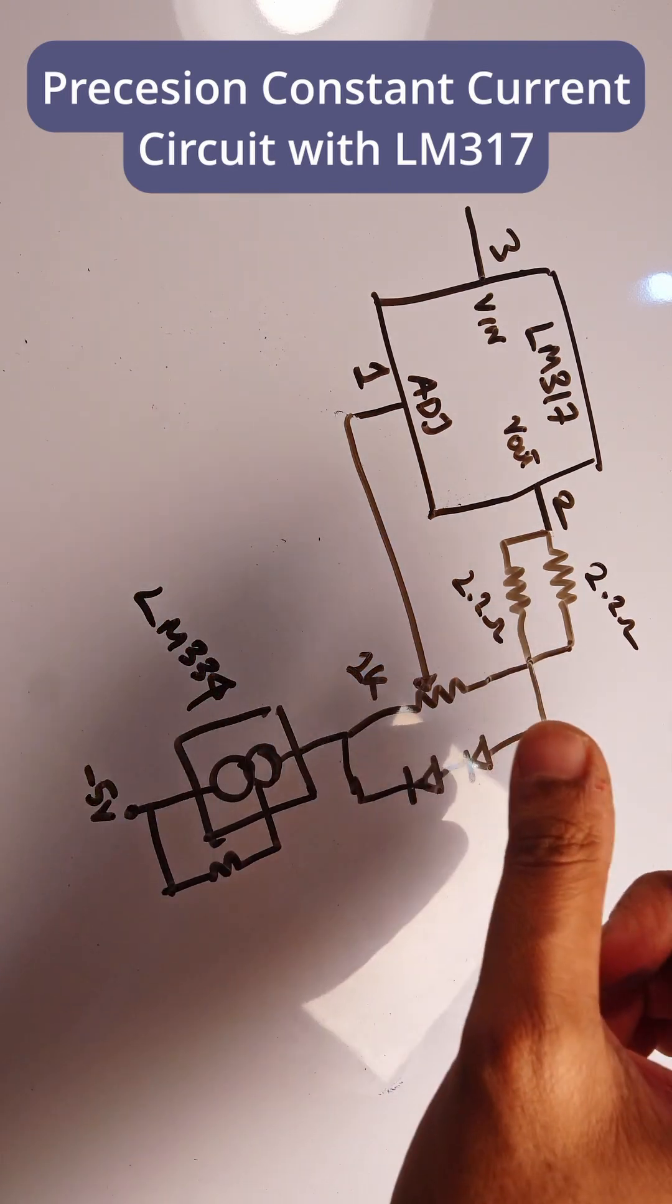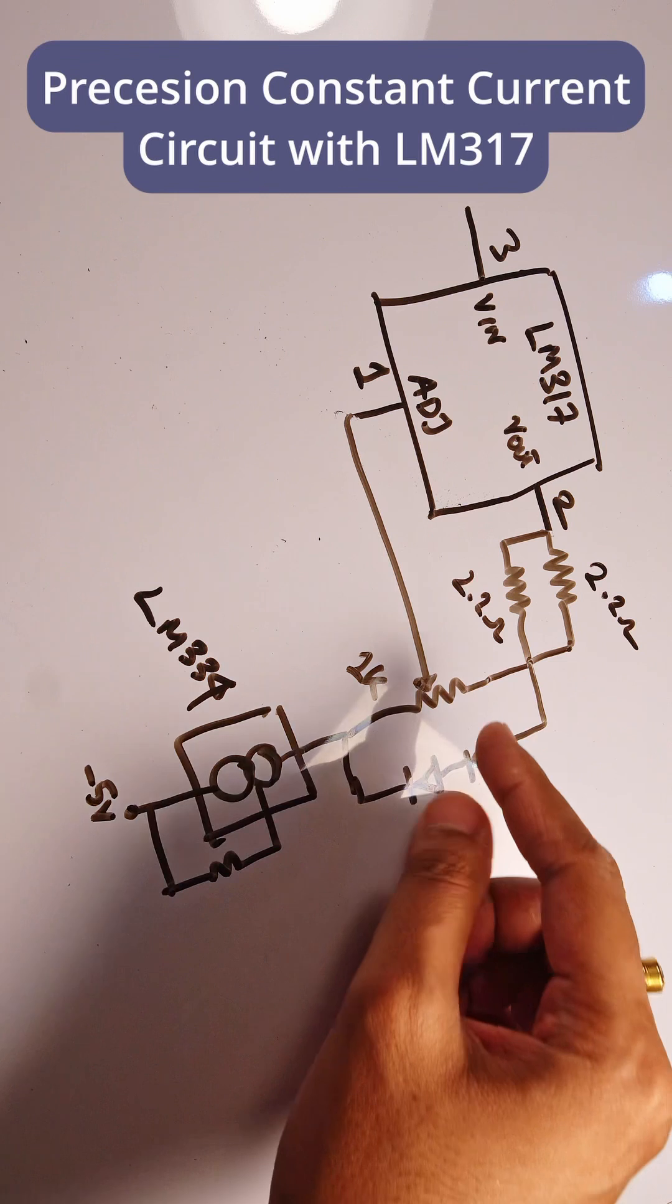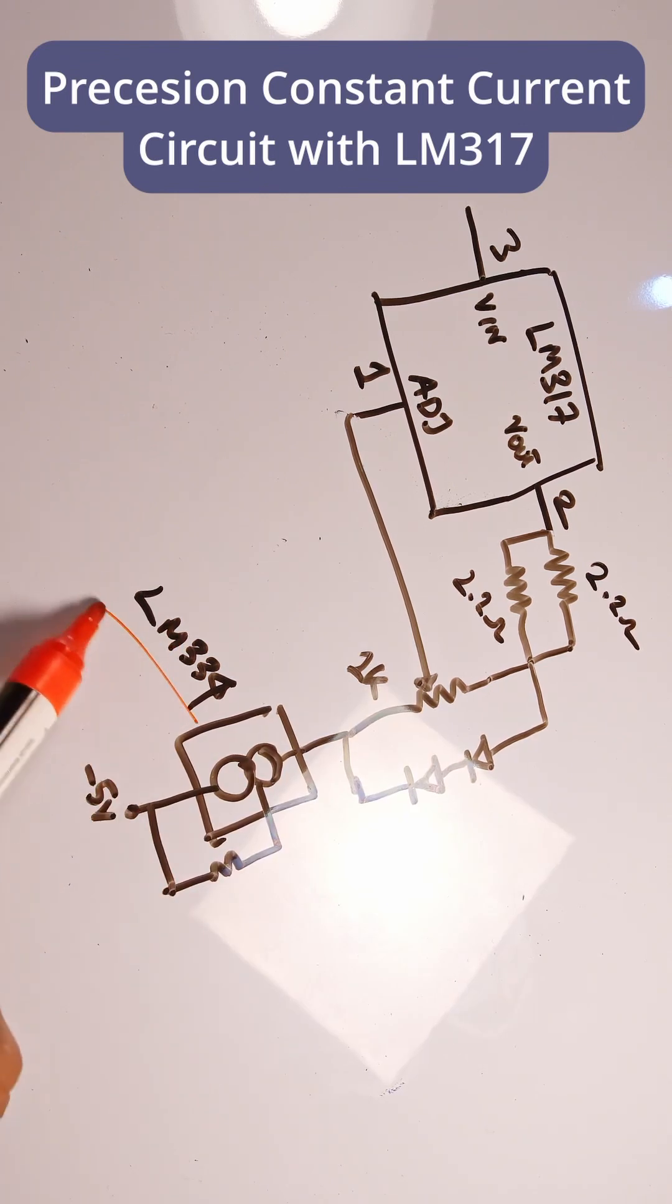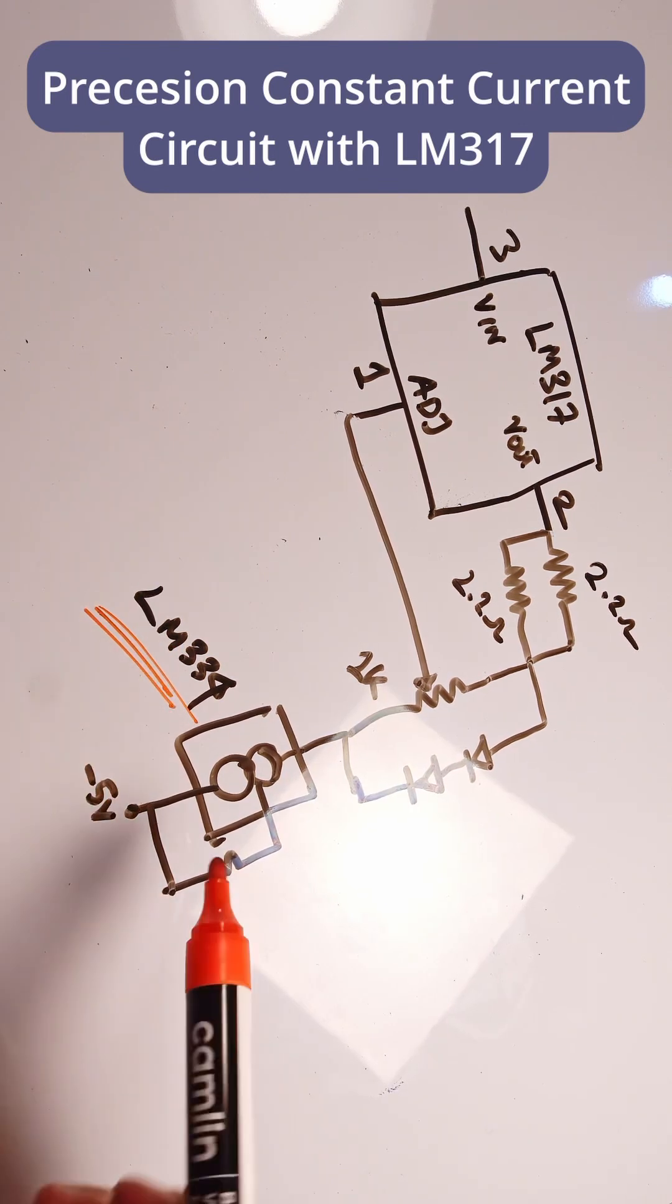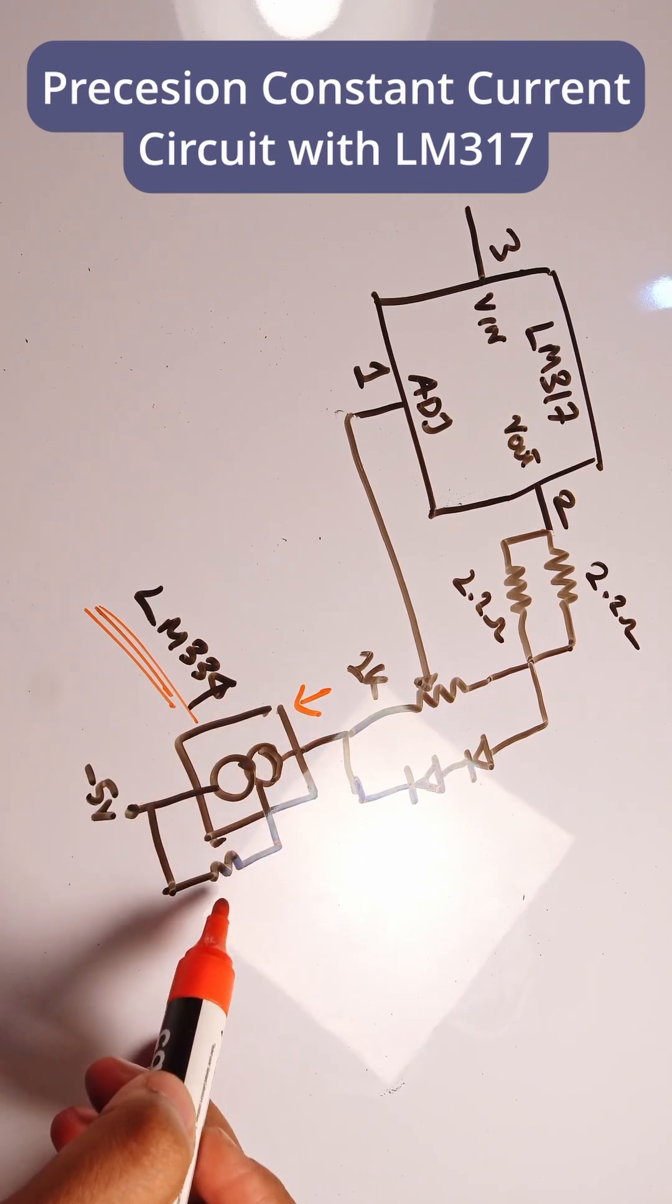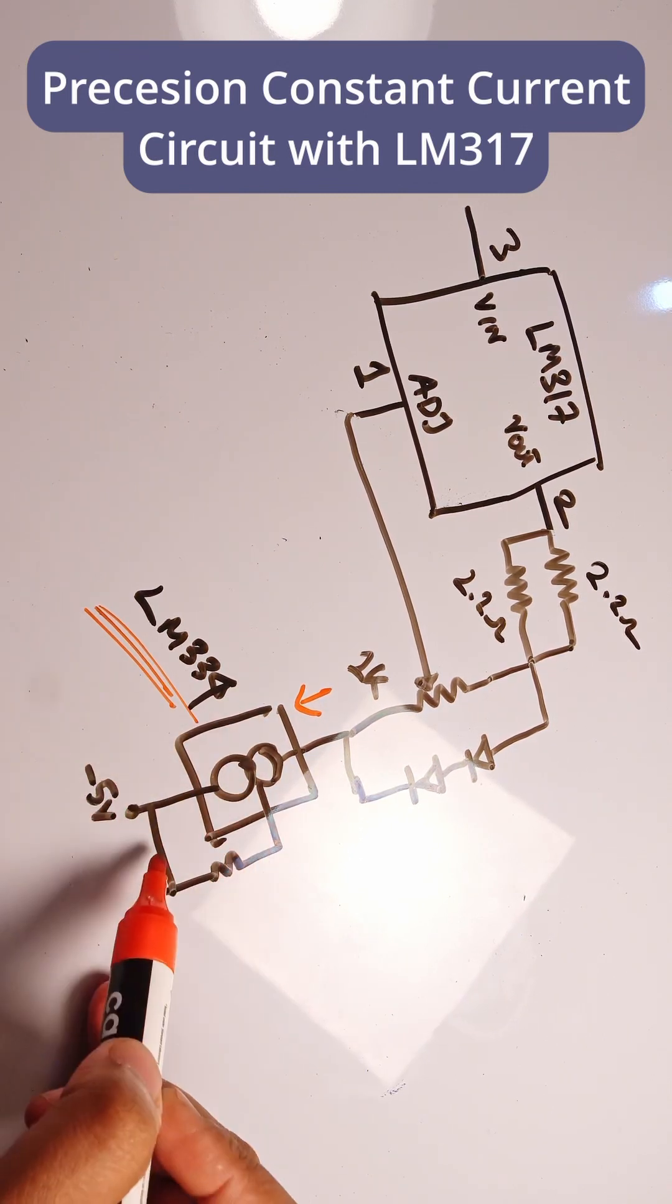Now this LM334 is a constant current regulator. In here, this is just acting like a current sink at this point. With this resistor we can set a constant current. In the datasheet you can just get the calculations of the resistor.